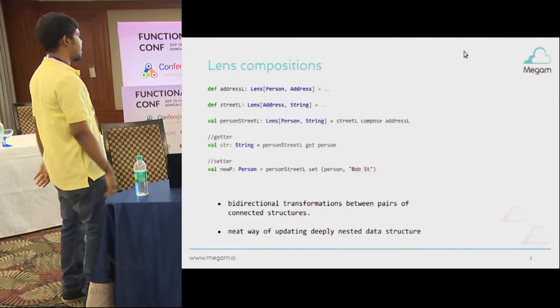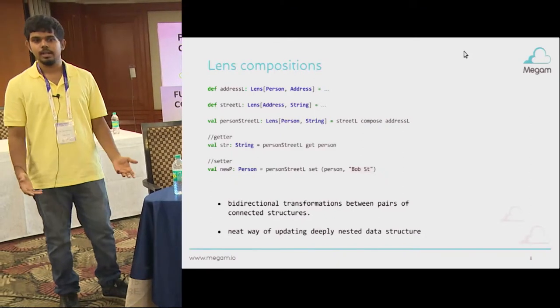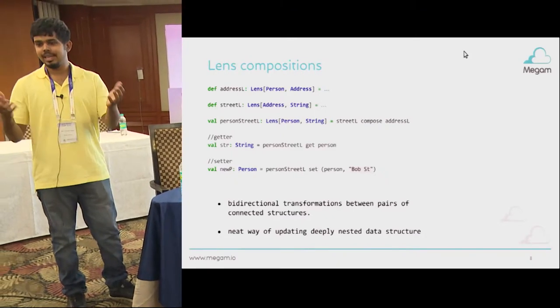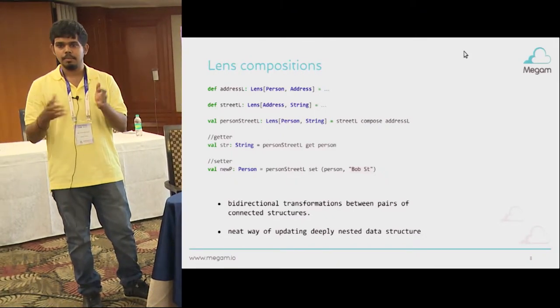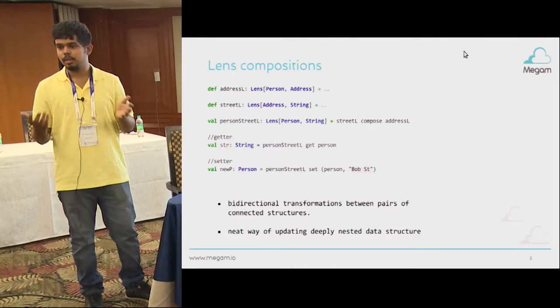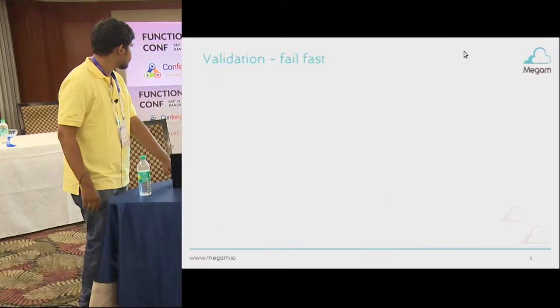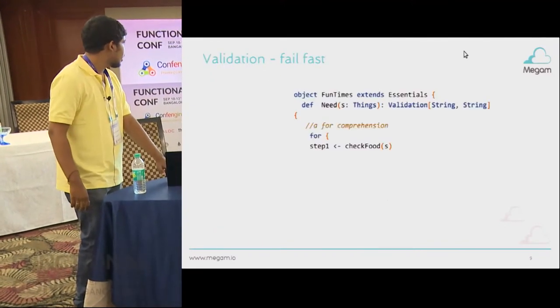That's a neat way of updating deeply nested data structures. You don't get clumsy code — you can get, set, and update using multiple composed lenses.